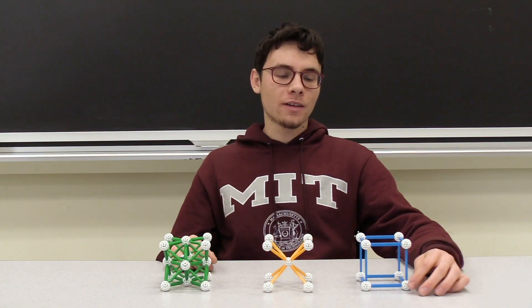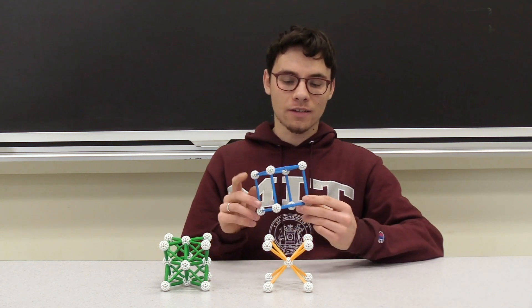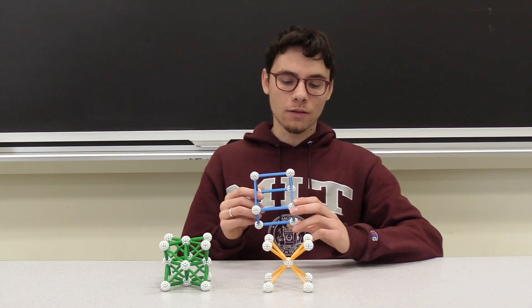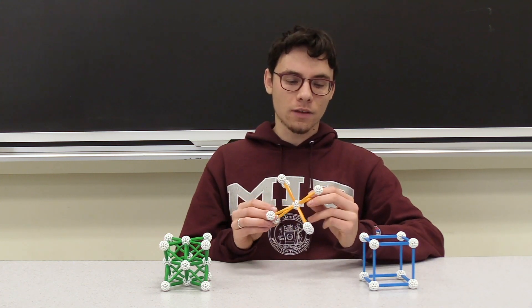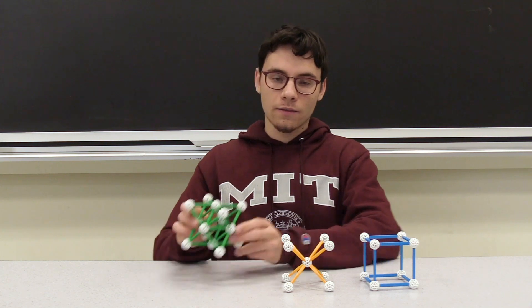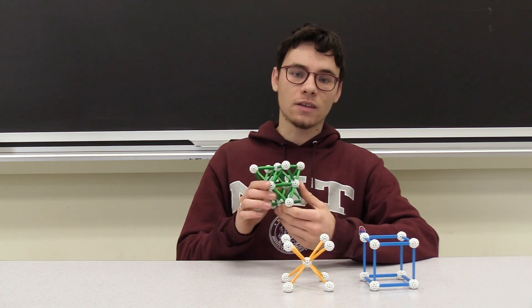We've now constructed three ball and stick models of cubic Bravais lattices. The simple cubic lattice has atoms at each of the eight corners of the unit cell. The body-centered cubic lattice has an additional atom in the body center of the unit cell. And the face-centered cubic lattice has an additional atom in each of the six face centers of the unit cell.